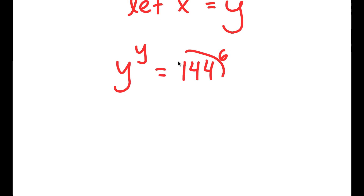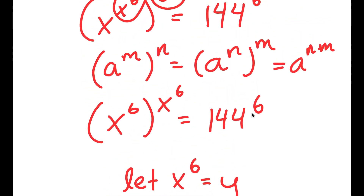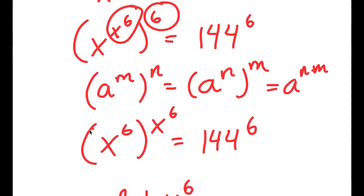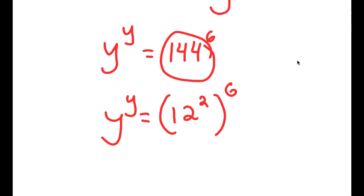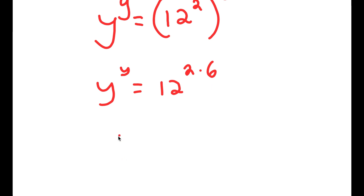Now, what I'm going to do is rewrite 144 as 12 squared. So now I have y to the power of y is equal to 12 squared to the power of 6. Using the property that a to the power of m to the power of n equals a to the power of n times m, I have 12 to the power of 2 times 6, and 2 times 6 equals 12. So I have y to the power of y is equal to 12 to the power of 12.